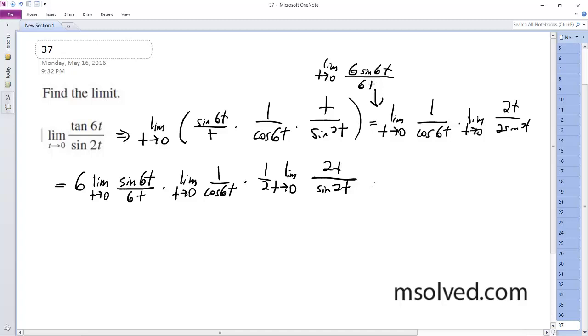Okay, so using our identities, we end up with 6 times 1 times 1 over 1 times 1 half times 1, which is all equal to 3. And that's it.